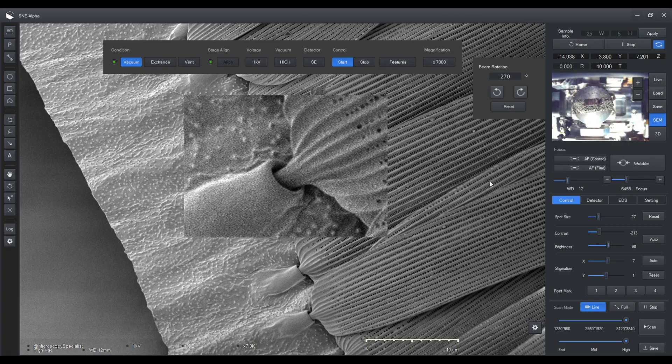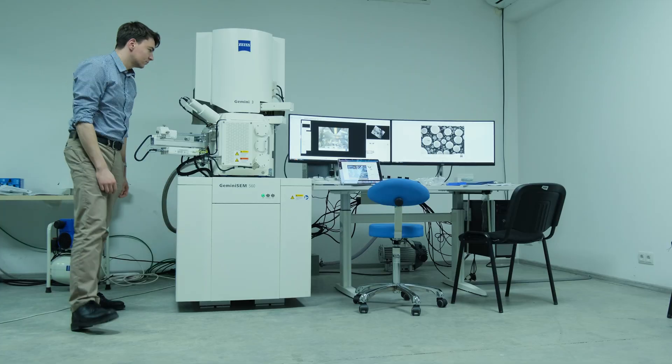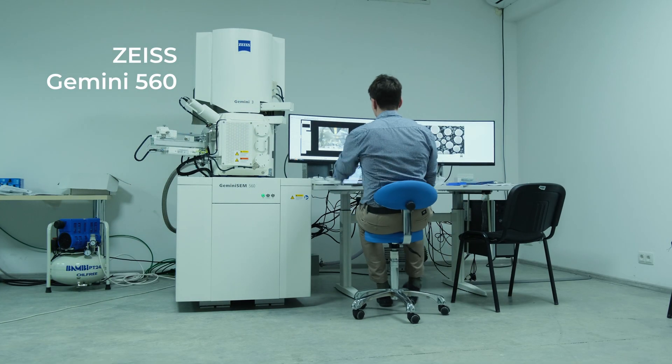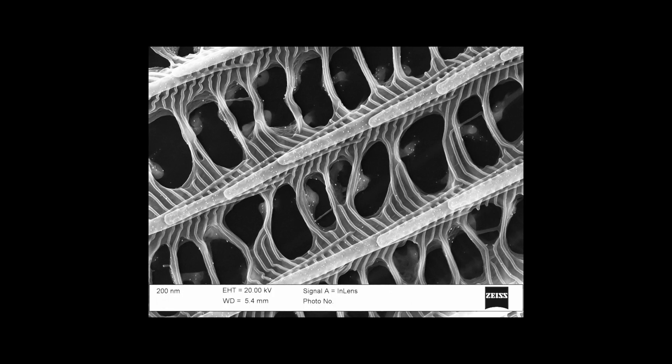With up to 20,000 times magnification, we can see incredibly fine detail on the butterfly wing scale. And with field emission microscope like this Gemini 560 and special in-lens detector, we can even get crazy sub-nanometer resolution.